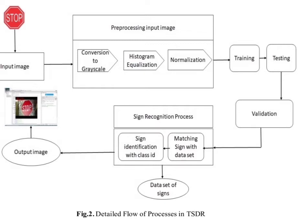Grayscaling is a process of converting an image from other color spaces — for example, RGB (red, green, blue) and HSV — to shades of grey. Histogram equalization is an image processing technique that modifies the contrast of the image by stretching out the intensity range of the input image to improve the image's contrast and equalize the image.